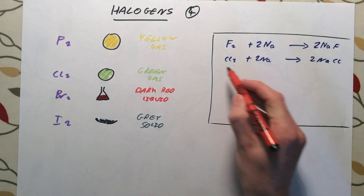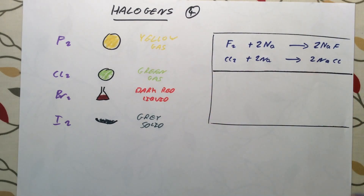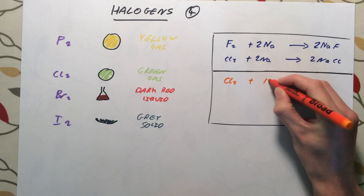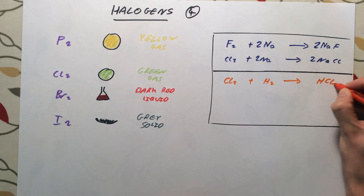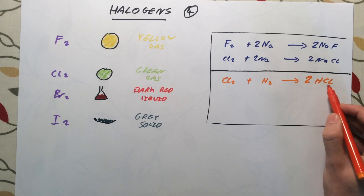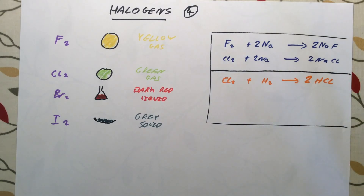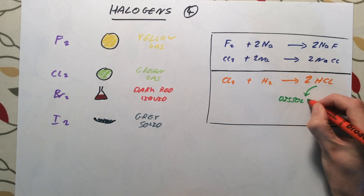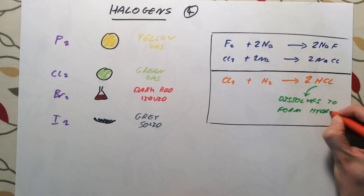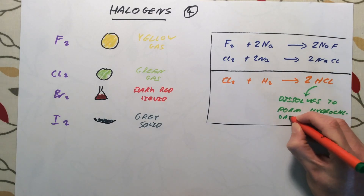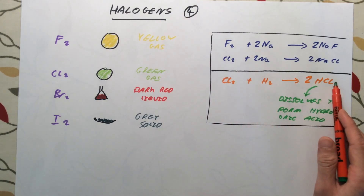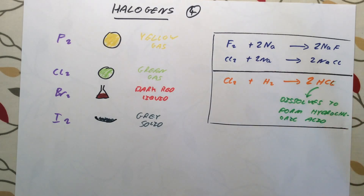A second type of reaction is reacting the halogens with hydrogen. For example, Cl2 reacting with hydrogen gives hydrogen chloride, HCl. You will have seen this before as hydrochloric acid — HCl is actually a gas, but it dissolves very easily in water to form hydrochloric acid. The same applies whichever halogen you use.